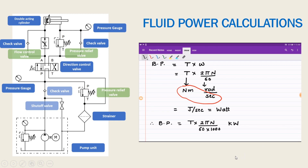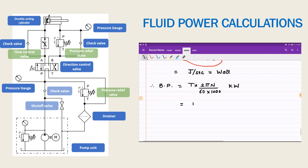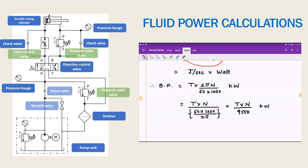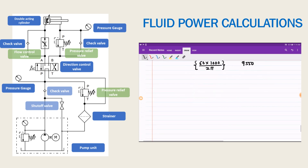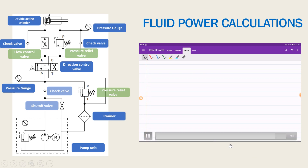To convert to kilowatt, divide by 1000, so brake power equals T times 2 pi n divided by 60,000. Rearranging, this equals T times n divided by 9550, since 60 times 1000 divided by 2 pi equals approximately 9550. This standard relation converts brake power to kilowatt using torque in Newton meter and speed in rpm.